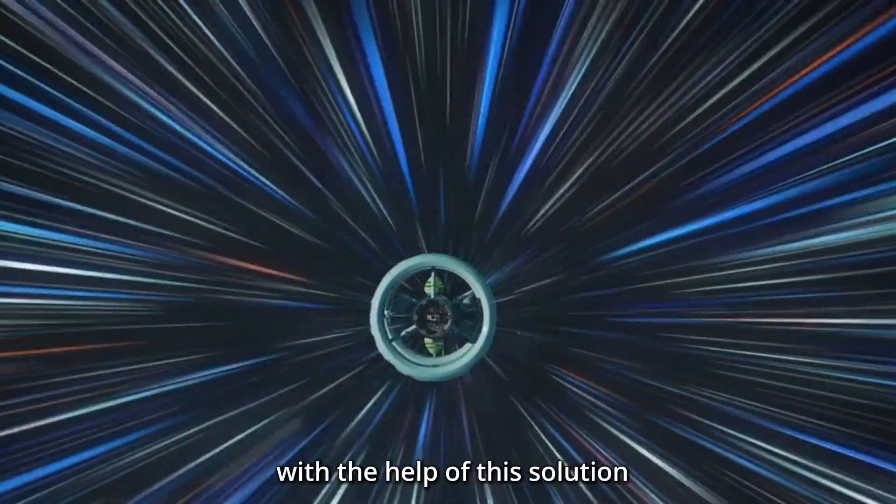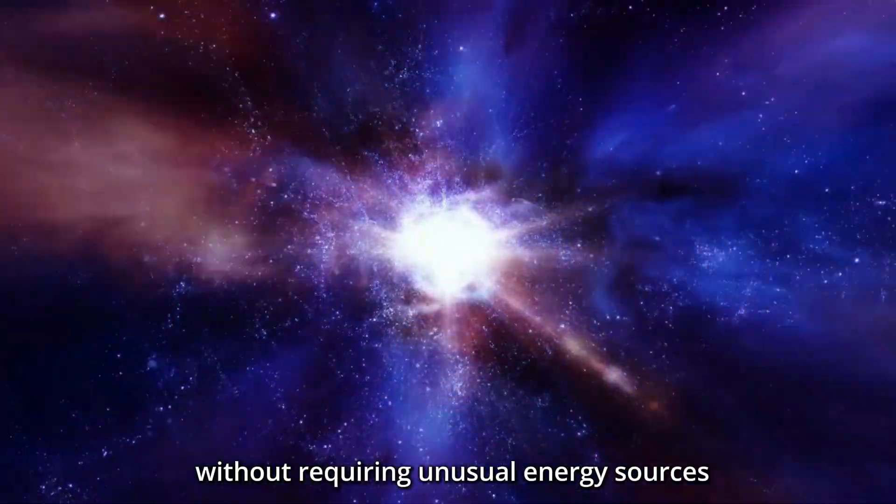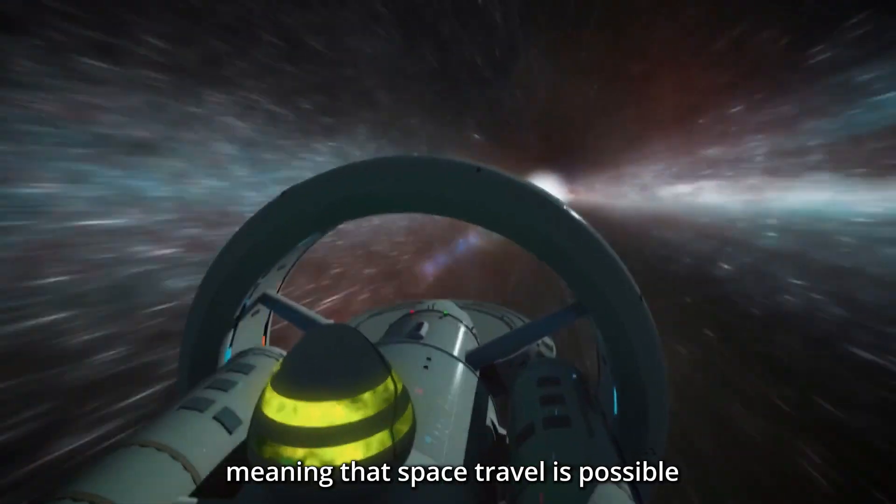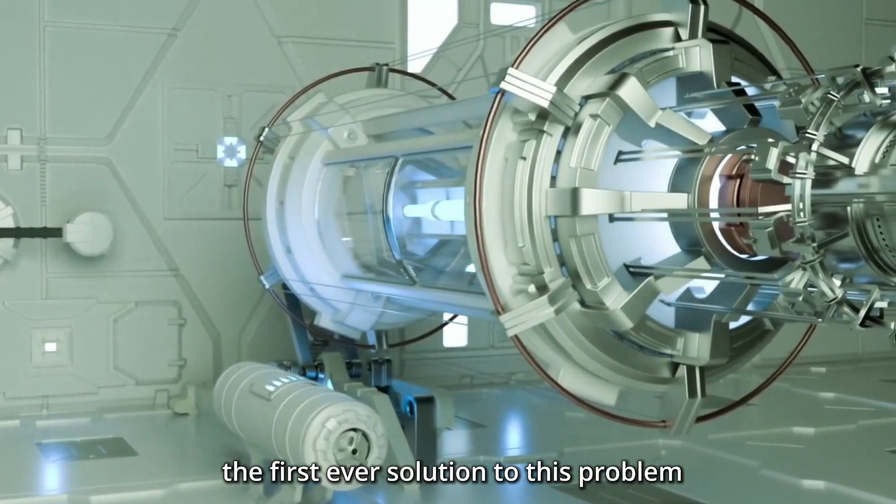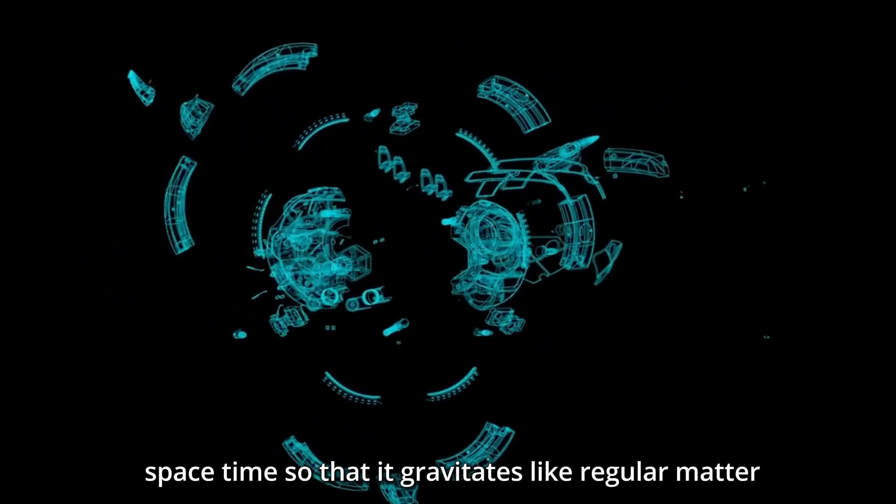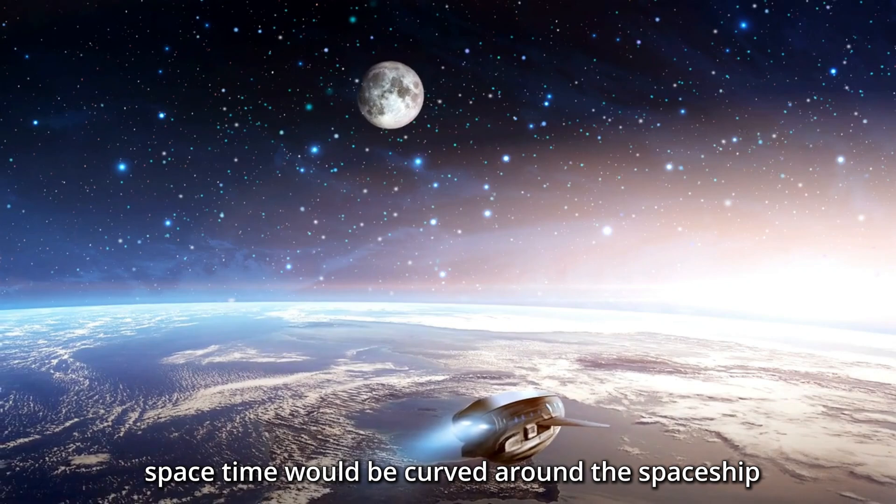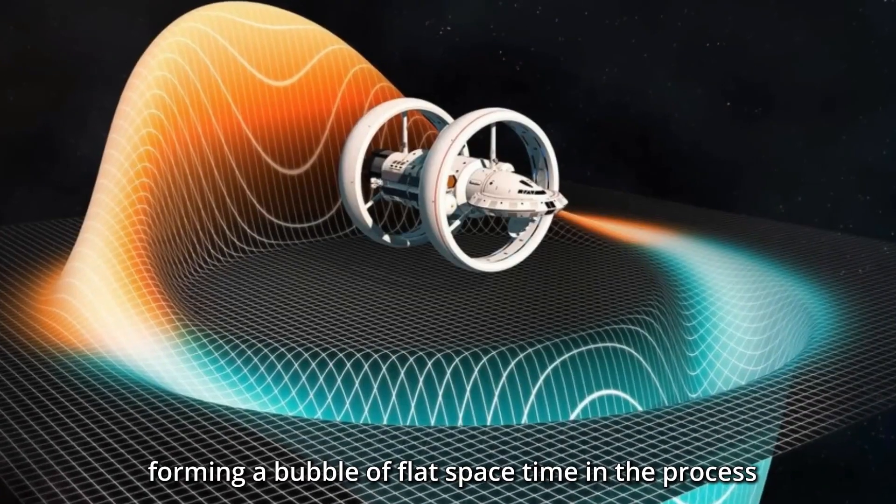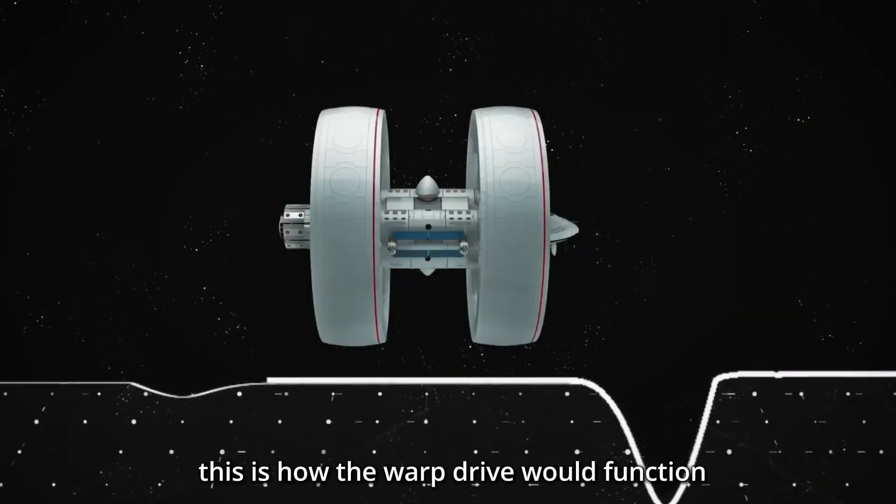With the help of this solution, objects can be transported at high but subluminal speeds without requiring unusual energy sources, meaning that space travel is possible at speeds slightly slower than light. The first ever solution to this problem is to engineer warp drive space-time so that it gravitates like regular matter. Space-time would be curved around the spaceship to shorten distances, forming a bubble of flat space-time in the process. This is how the warp drive would function.